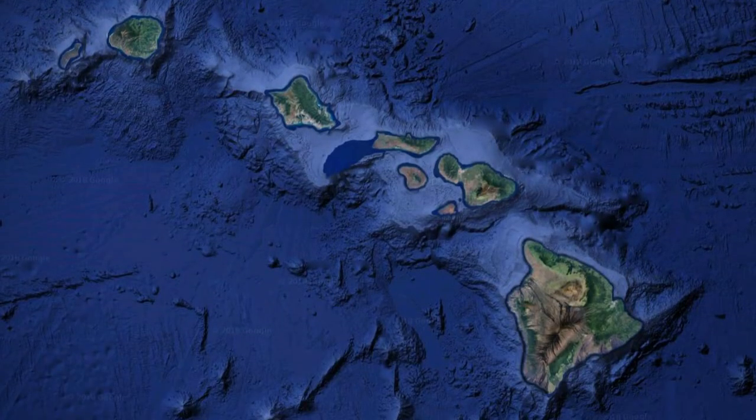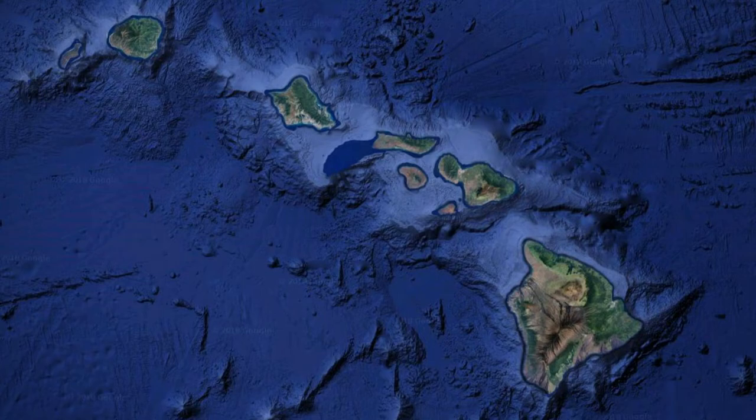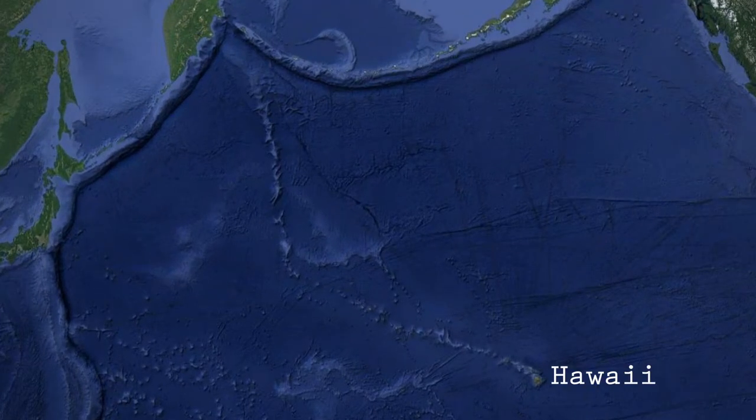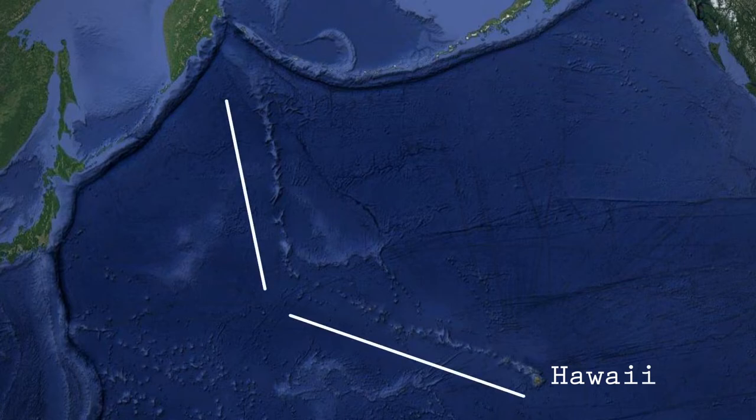By understanding this process, you can track the movement of these massive tectonic plates just by looking at Google Maps. Zooming out from Hawaii, you'll notice a chain of islands and underwater mountains extending northwest, known as the Hawaiian Emperor Seamount Chain.